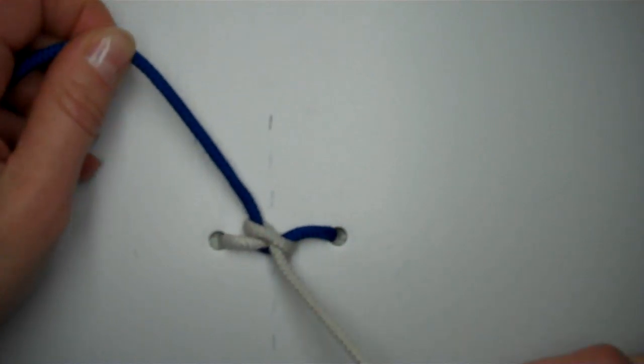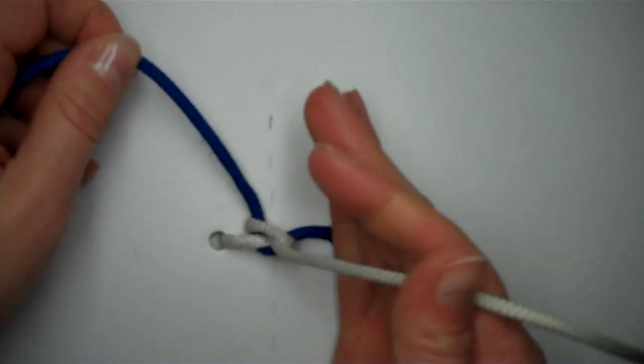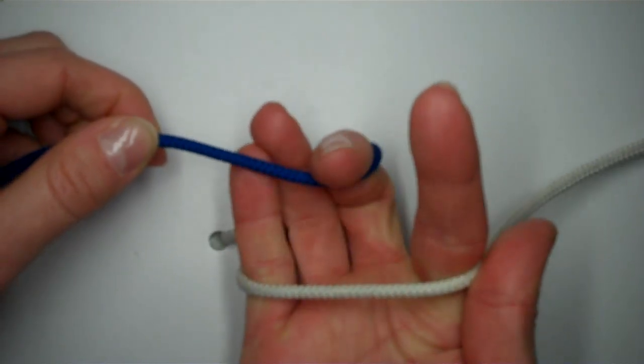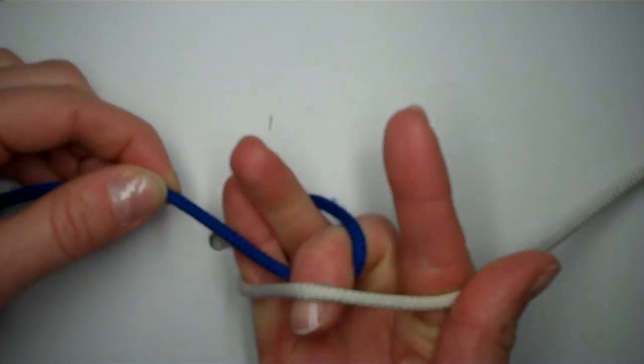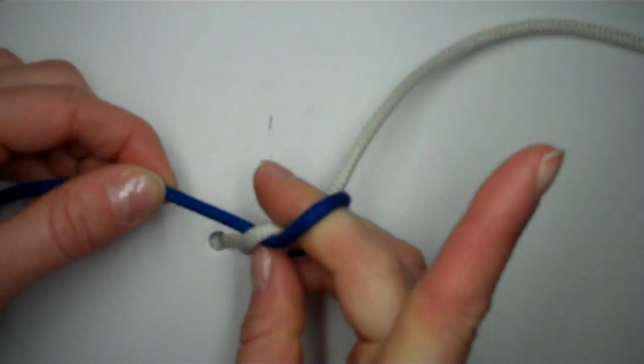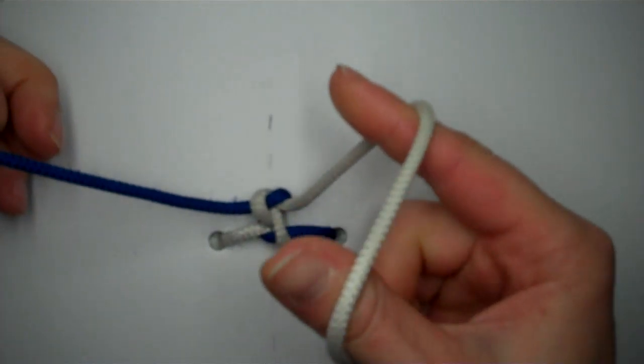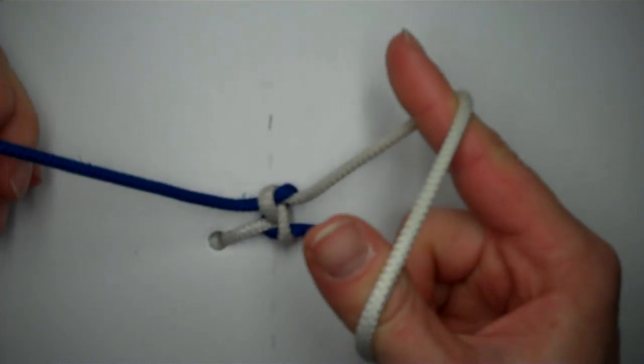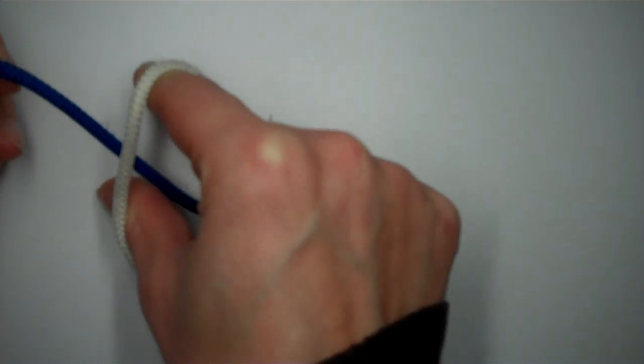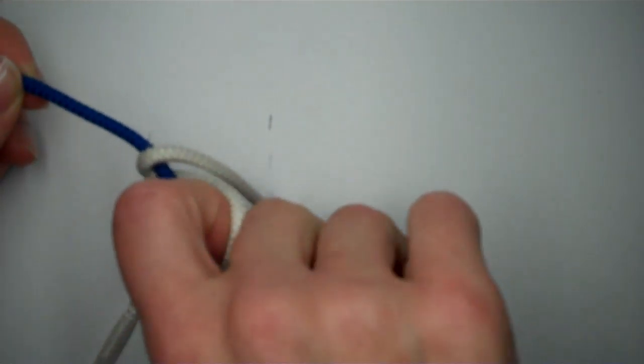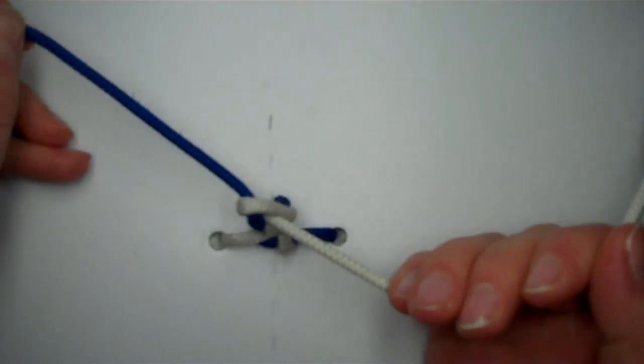Let's do one more on top of that. So again I'm going to take the string here in my right hand. A loop. Use my middle finger to kind of pinch it in there. Then I'm going to take the string around my index finger and my thumb. Create an X here. And use my index finger to sneak that string through.